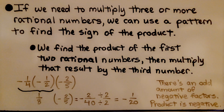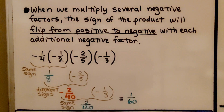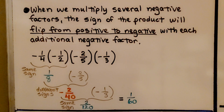There's an odd amount of negative factors here, so the product is negative. When we multiply several negative factors, the sign of the product will flip from positive to negative with each additional negative factor.